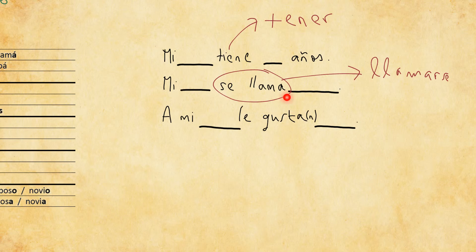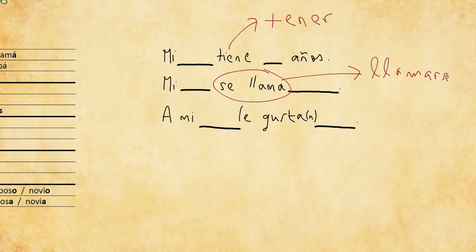So the conjugation goes: 'me llamo', 'te llamas', 'él/ella se llama' — that's what we have here. The last sentence has the verb 'gustar', which I've explained previously is a tricky verb because it doesn't follow the regular rules. It works somewhat like a reflexive verb, but the reflexive parts are different — here we use 'le' instead of 'se'. This 'le' is also an essential part of the sentence that must be included — it comes with 'gustar' in the third person.